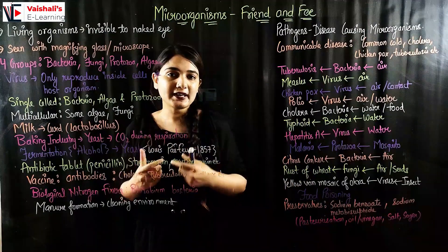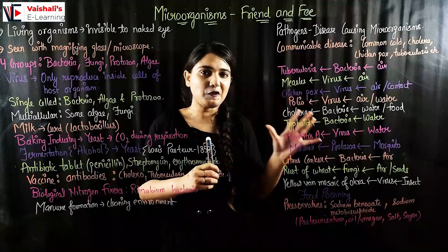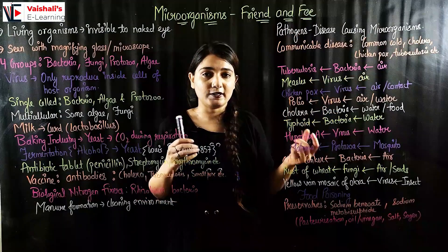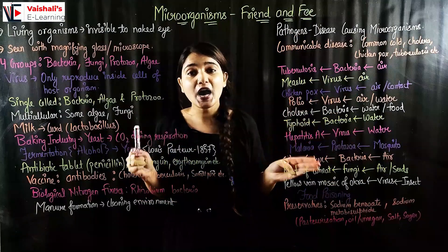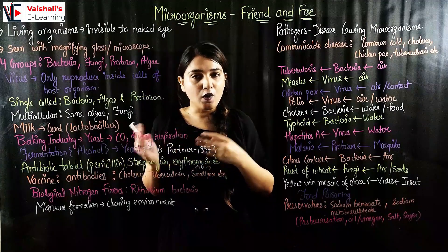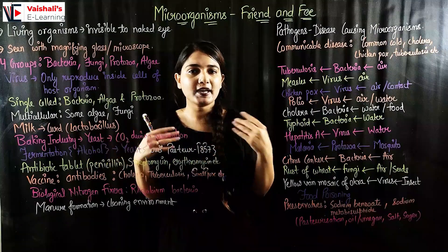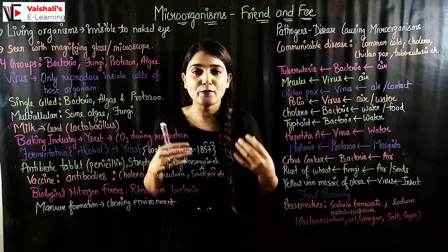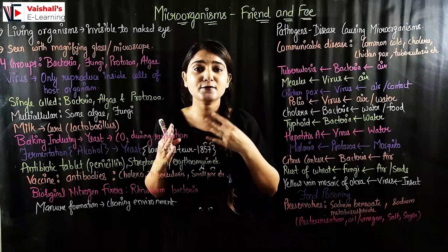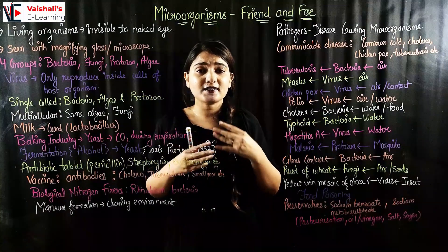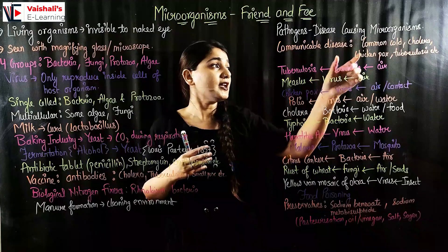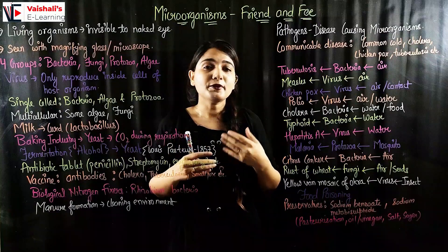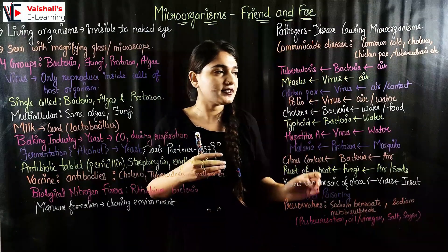Now coming to the bad part of microorganisms. Pathogens are disease-causing microorganisms — those which cause any kind of disease in our body, an animal's body, or a plant's body. Some diseases are communicable diseases, which are very dangerous because they can spread from one person to another. Examples include common cold, cholera, chicken pox, and tuberculosis.